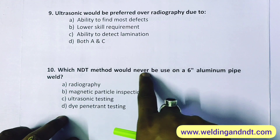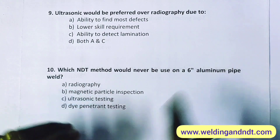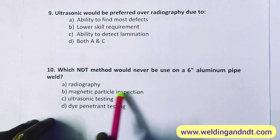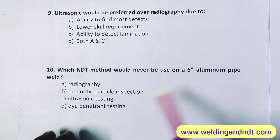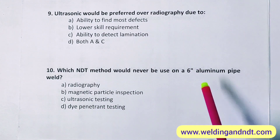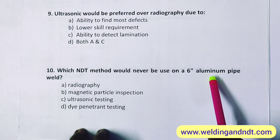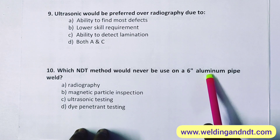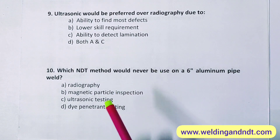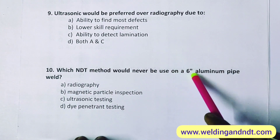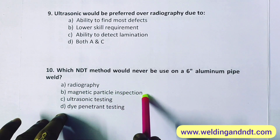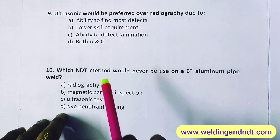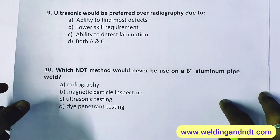Question 10: which NDT method would never be used on a 6-inch aluminium pipe? The options are radiography, magnetic particle inspection, ultrasonic testing, and dye penetrant test. Since aluminium is mentioned, it is non-ferromagnetic. Non-ferromagnetic materials like aluminium and austenitic stainless steel cannot be checked with magnetic particle inspection. The 6-inch dimension has no significance here. So the answer is B — magnetic particle inspection.